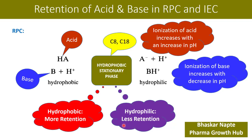To summarize: unionized acidic or basic compounds will have more retention time in reverse phase chromatography, whereas ionized acidic and ionized basic compounds will have lesser retention time in reverse phase chromatography.